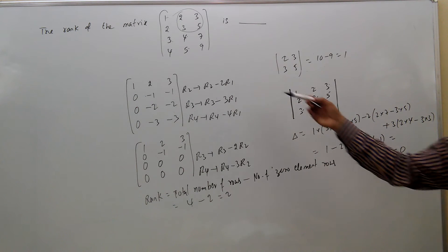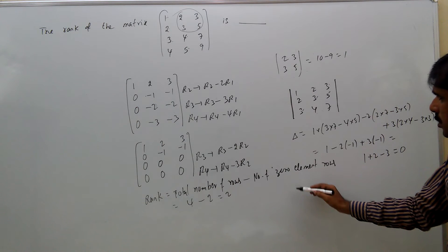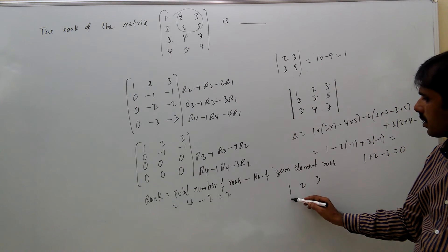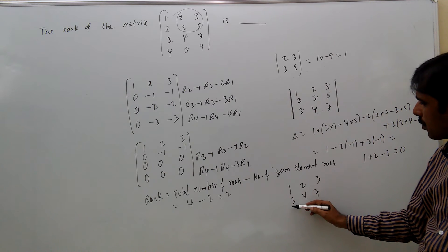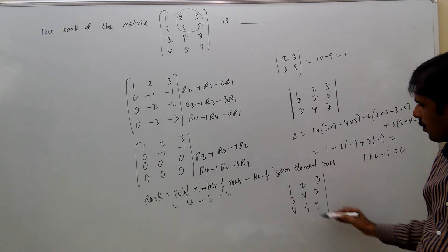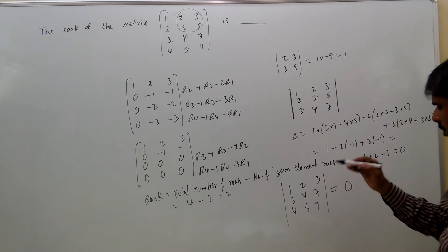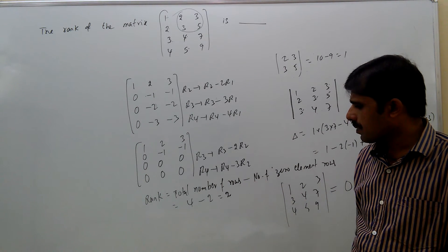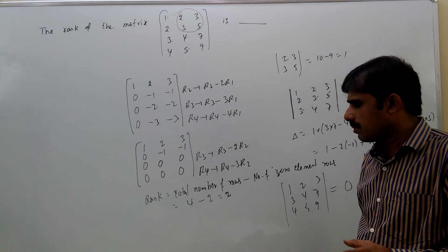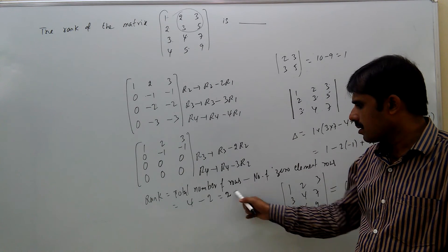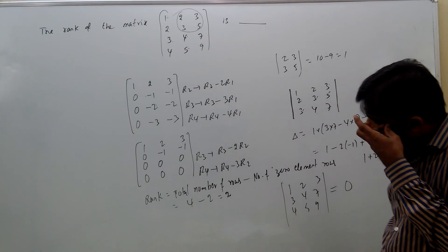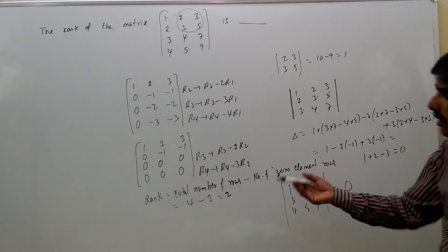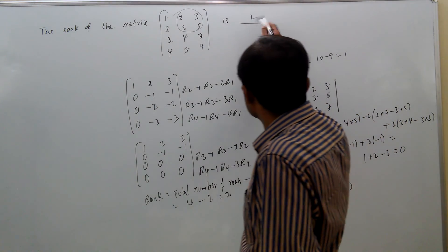So any other 3×3 determinant you take, like from rows 1, 2, 4 with columns giving 1, 2, 3, 4, 2, 3, 4, 5, 9, will also become 0. All higher-order determinants become 0. Rank 2 means the maximum non-zero determinant is second order only, and all higher-order determinants will be 0. That is the meaning of rank. So here, rank is 2.